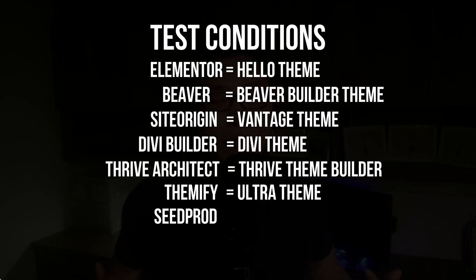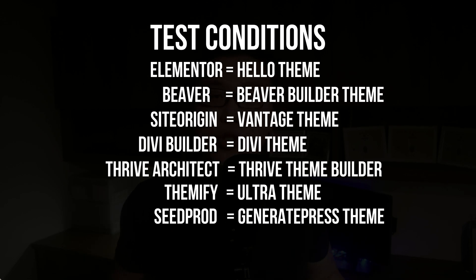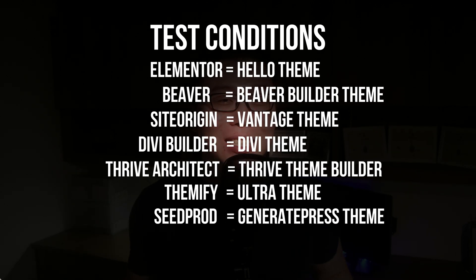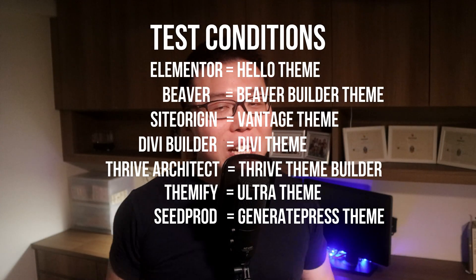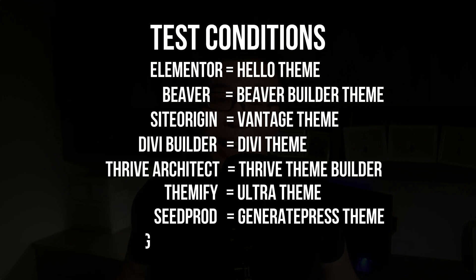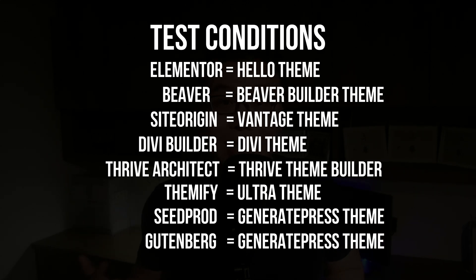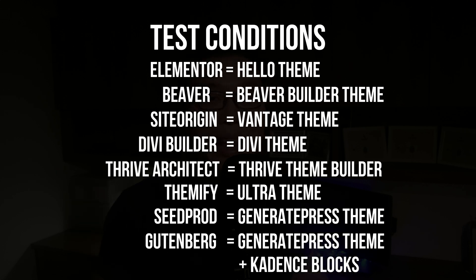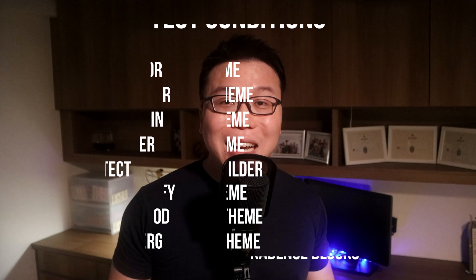The only exception is SeedProd, which doesn't have a specific native theme, so we'll install the fastest WordPress theme I've tested — GeneratePress. For Gutenberg, which is our main test subject, we'll also be installing GeneratePress and using CadenceBlocks to help build the landing page. This gives Gutenberg a slight disadvantage in terms of theme compatibility, just like SeedProd. These are the conditions to make the test fair and objective.